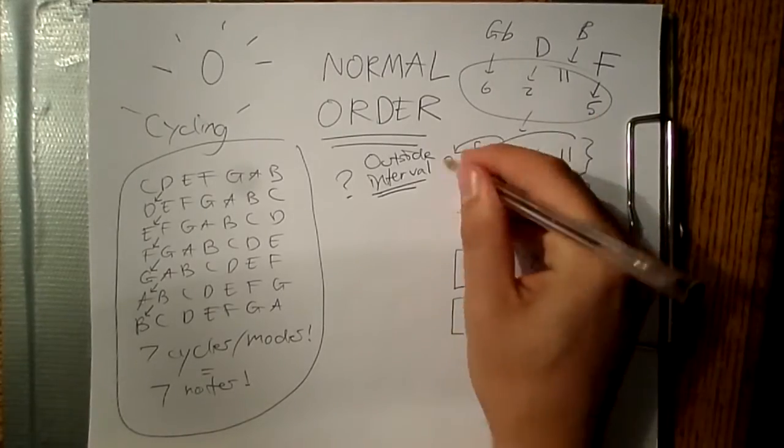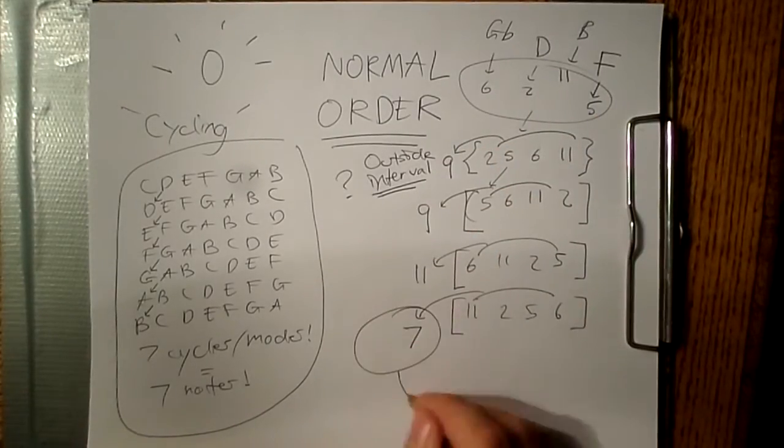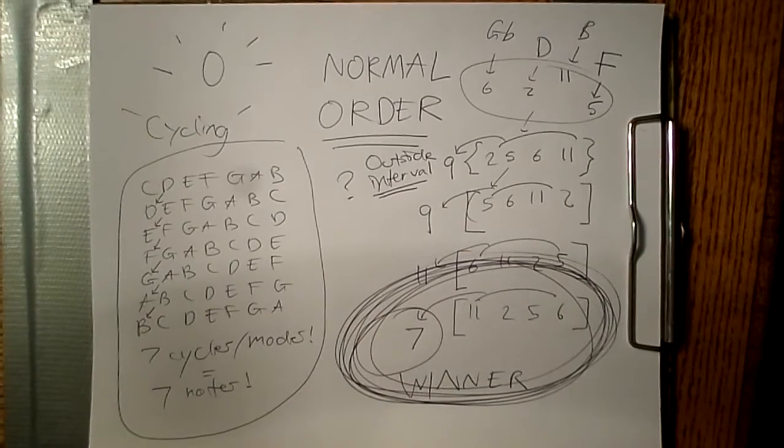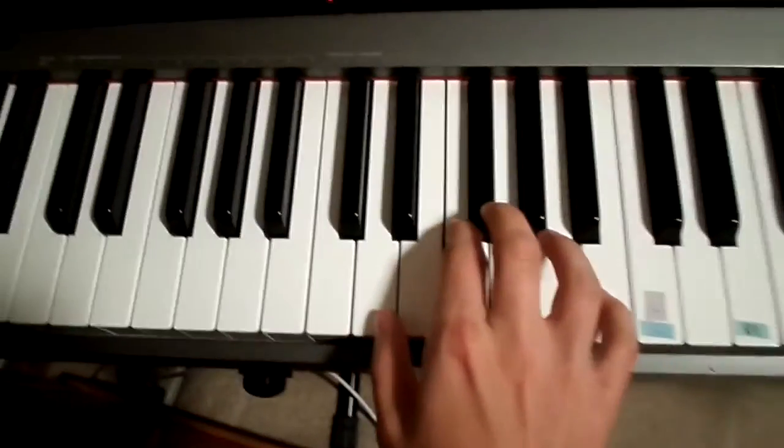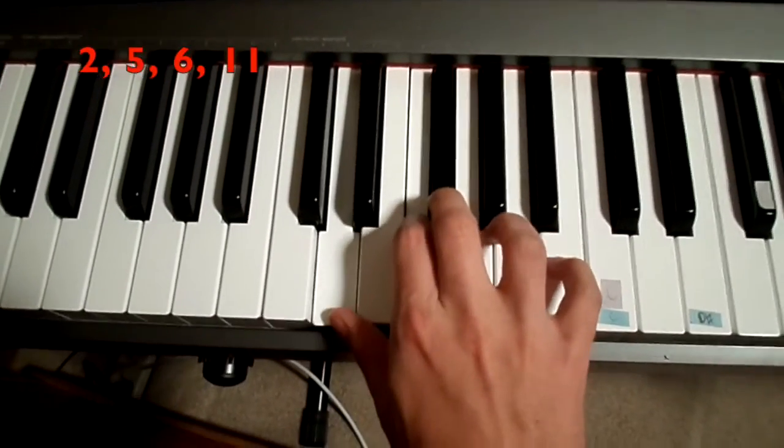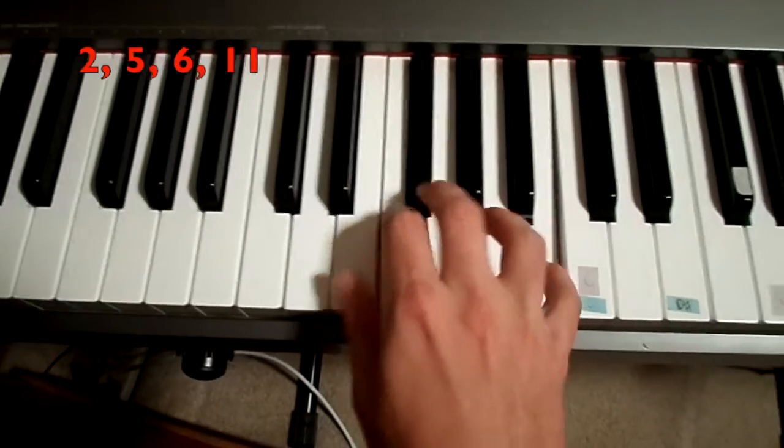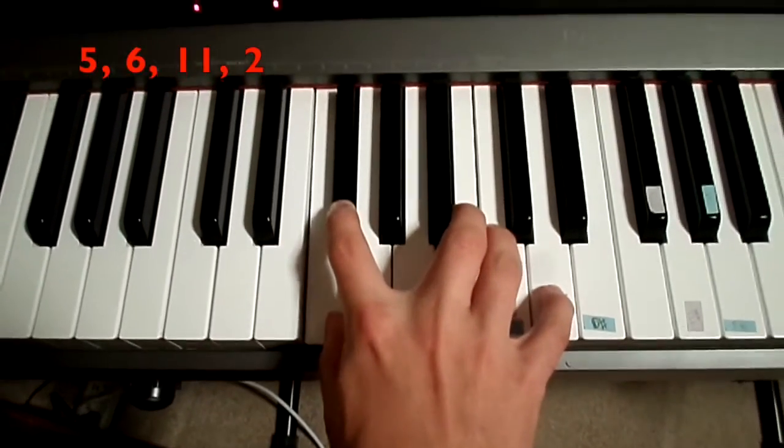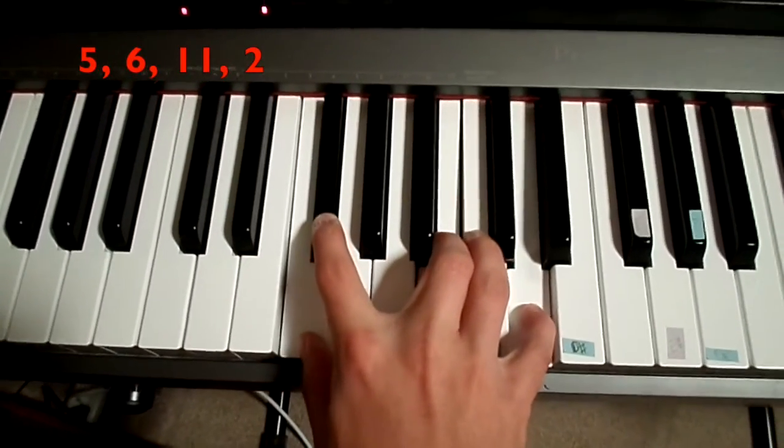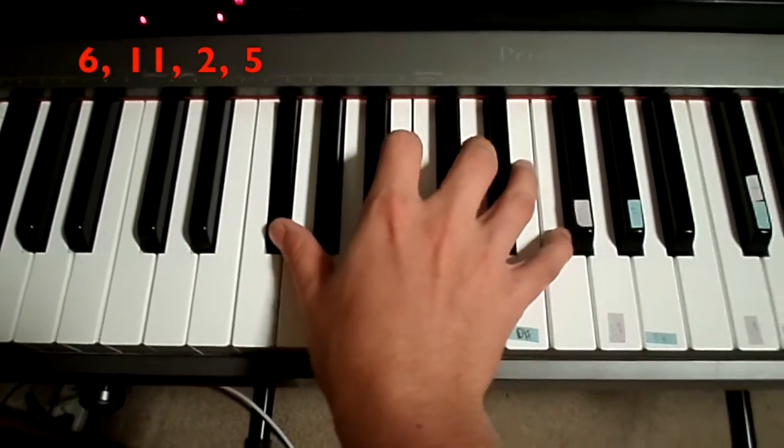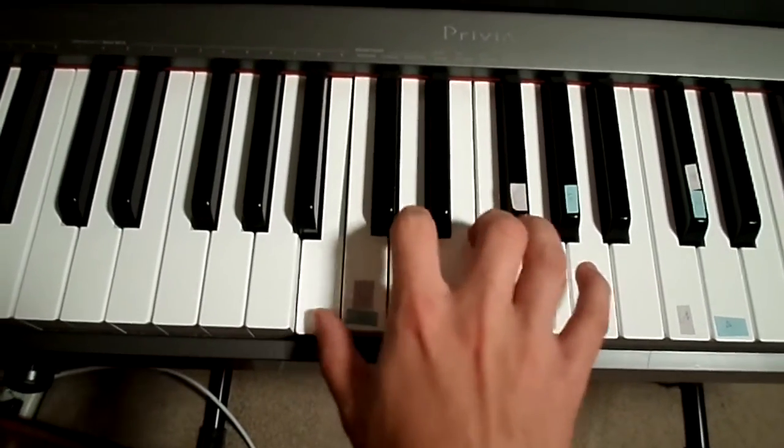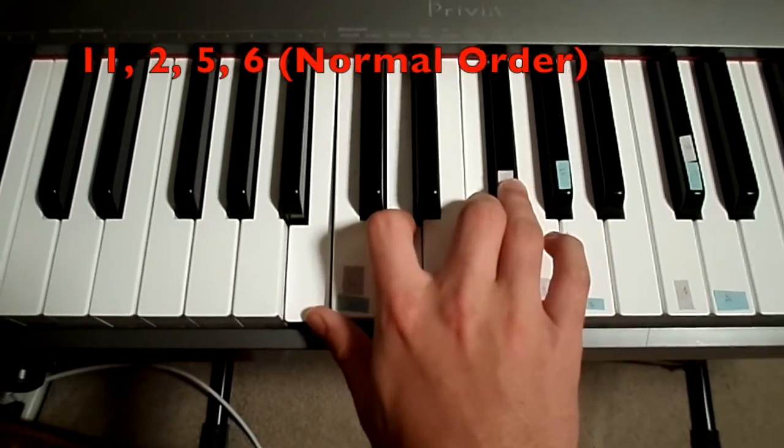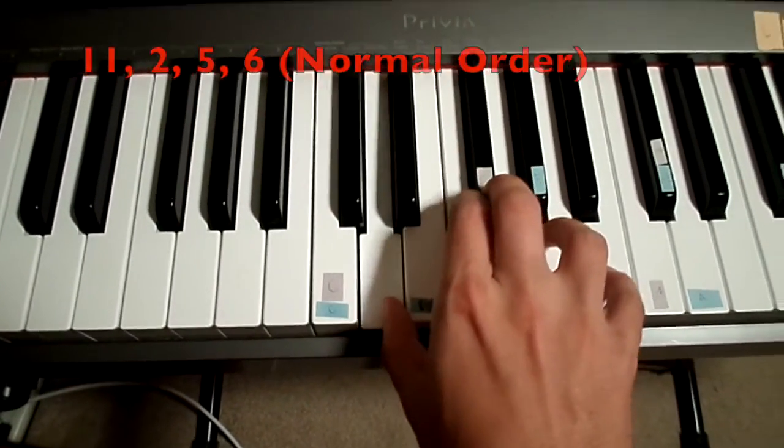And there. It looks like 11, 2, 5, 6 is the most compact. Here's what that cycling looks like on the piano. See how when the perfect fifth is on the outside, the shape is the smallest? That's the most compact.